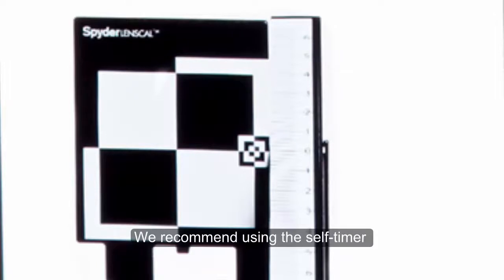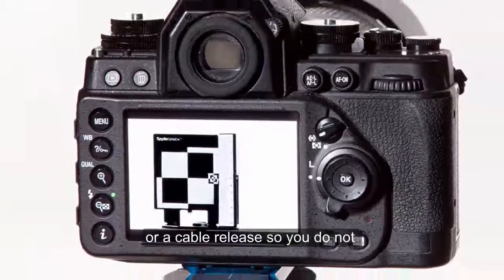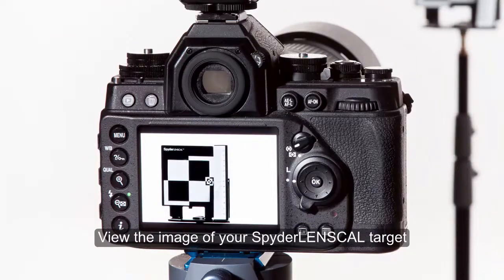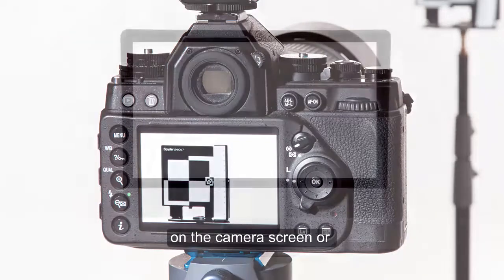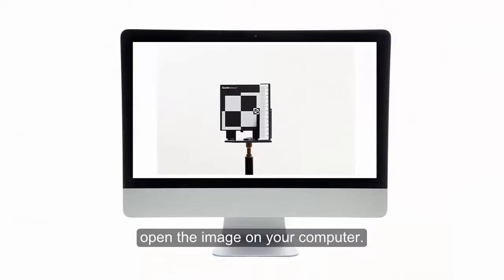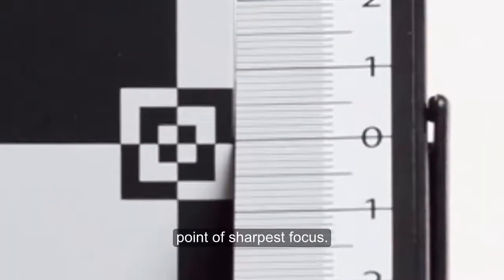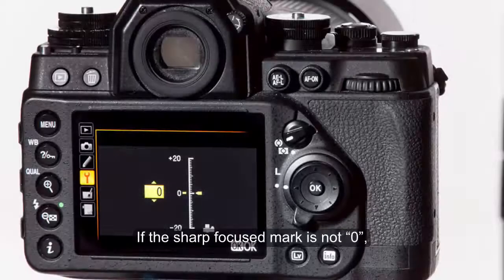We recommend using the self-timer or a cable release so you do not introduce any vibration. View the image of your Spider Lens Cal target on the camera screen or open the image on your computer. Zoom in on the ruler to evaluate the point of sharpest focus.